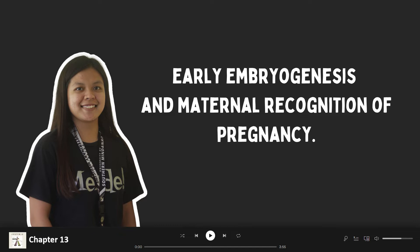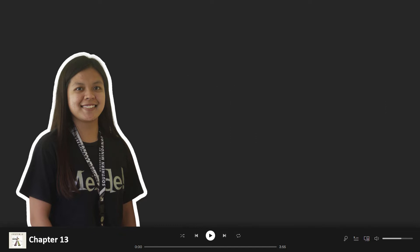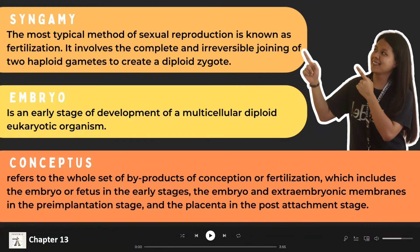The meaning of these expressions varies somewhat based on the animal being referred to as well as the circumstance in which it is used. First off, let's describe what is syngamy. Syngamy is the most typical method of sexual reproduction, also known as fertilization. It involves the complete and irreversible joining of two haploid gametes to create a diploid zygote.